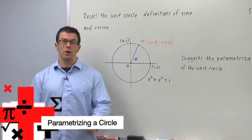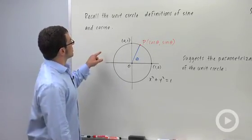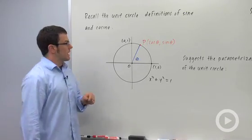I want to talk about finding the parametric equations for a circle. Let's start by looking back at the unit circle. Remember the unit circle definitions of cosine and sine?